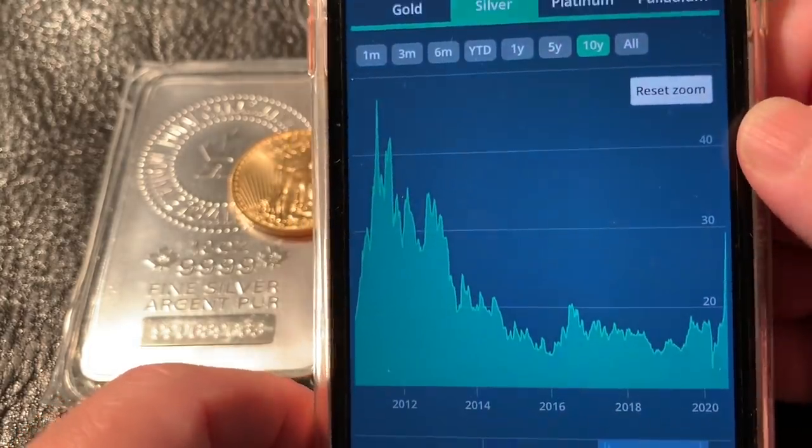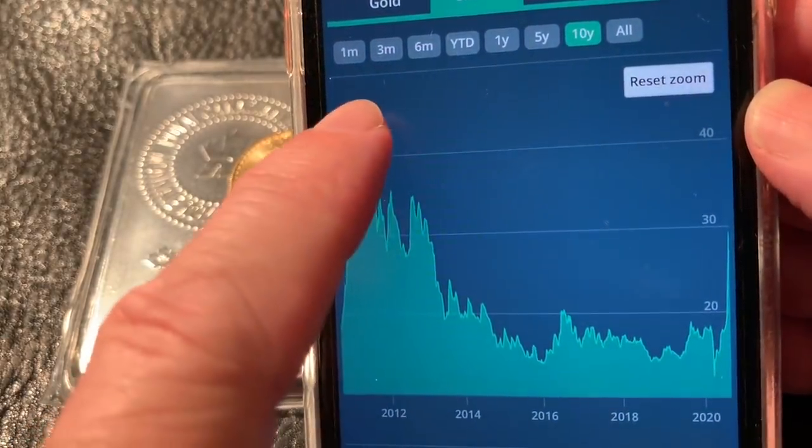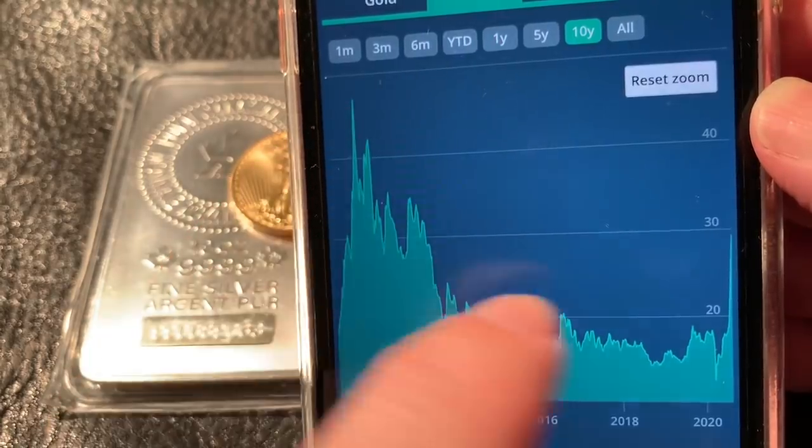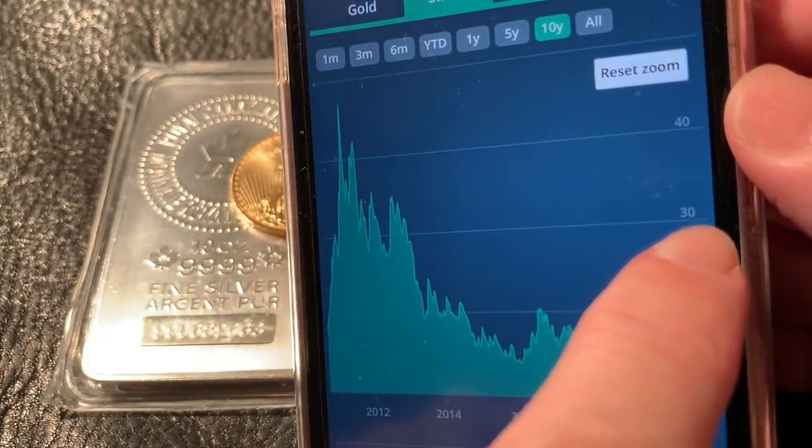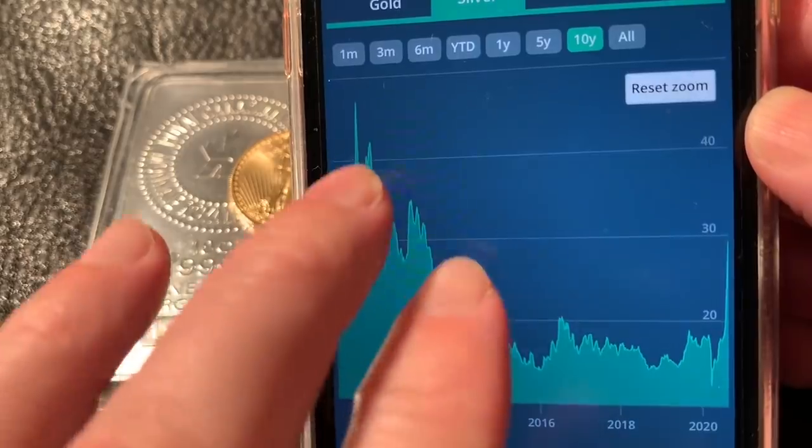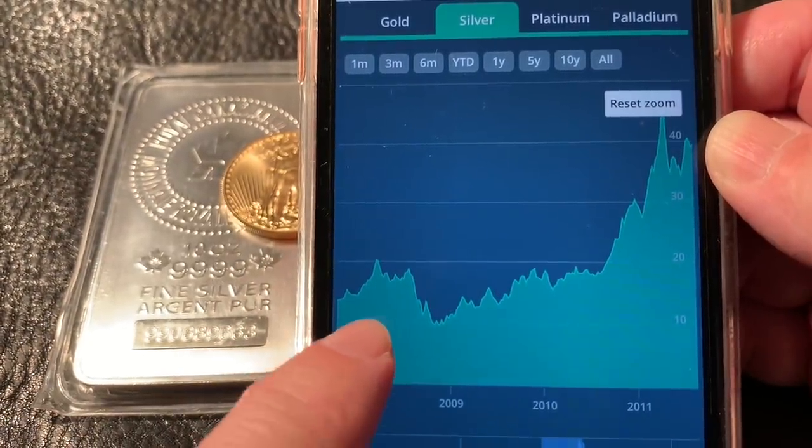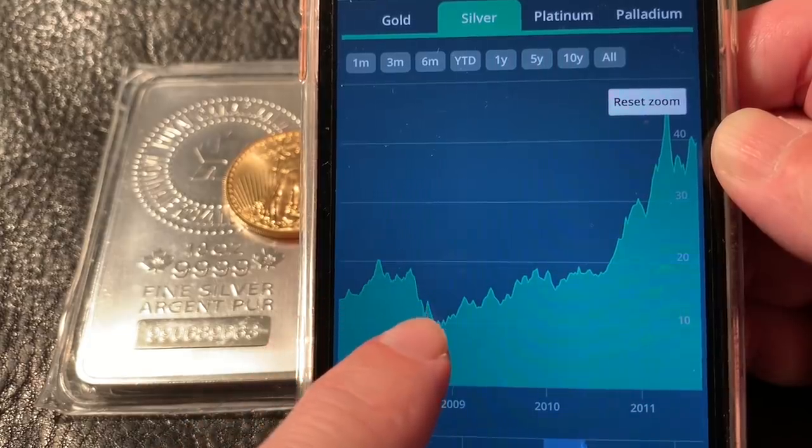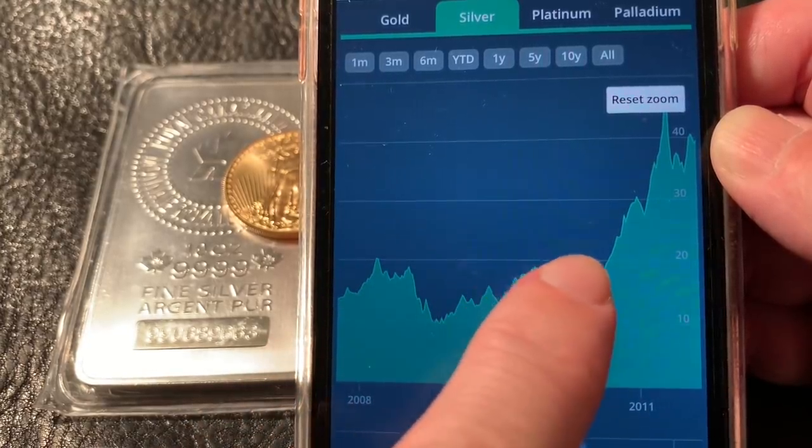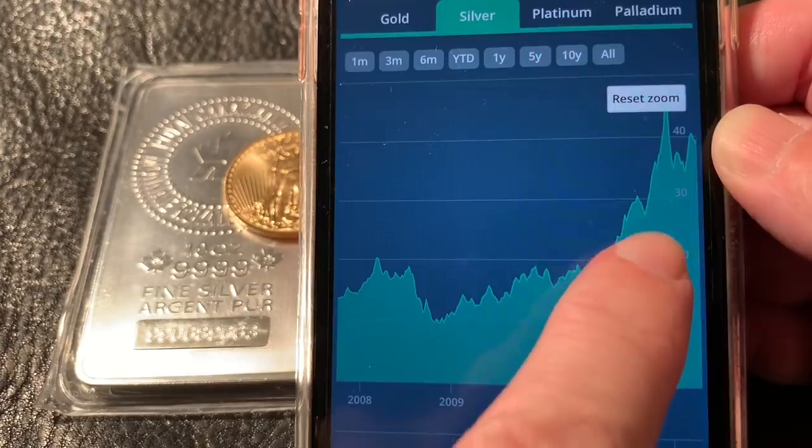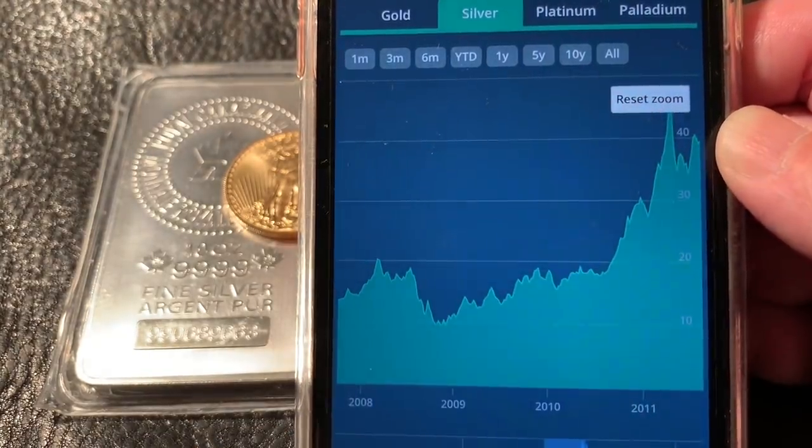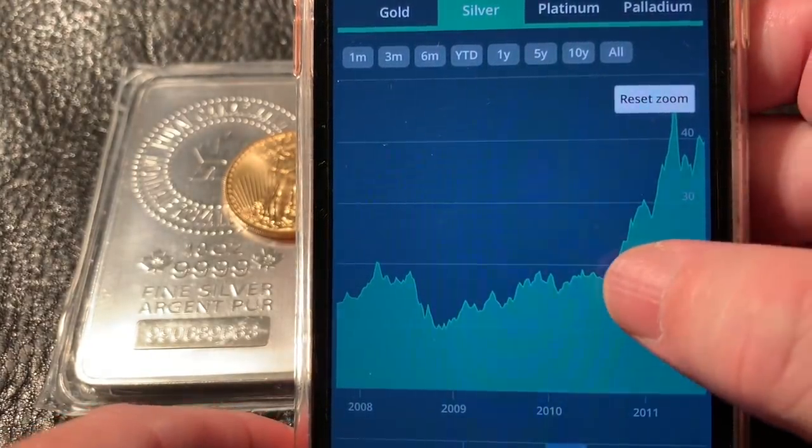And so if we go back 10 years, we can see that the all-time high was above $40. And here we are in the high 20s. But if we zoom in, we can see what happened in 2008's financial crisis, and then how silver responded, and then how silver reached its all-time high, and then what happened after it reached its all-time high.